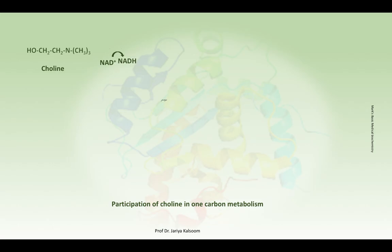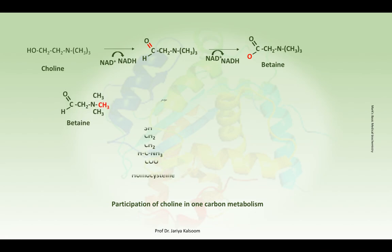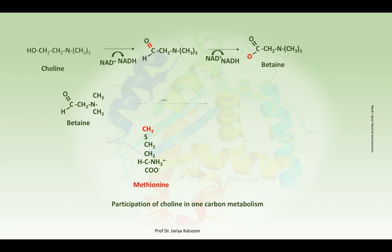Choline is an essential component of phospholipids. Degradation of choline produces betaine aldehyde, which is further oxidized to betaine or trimethylglycine. In the liver, betaine can donate a methyl group to homocysteine, forming methionine. This allows the liver to have two routes of homocysteine conversion to methionine. The methyl group transferred is shown in red, and homocysteine is converted to methionine, which can participate in one-carbon metabolism.